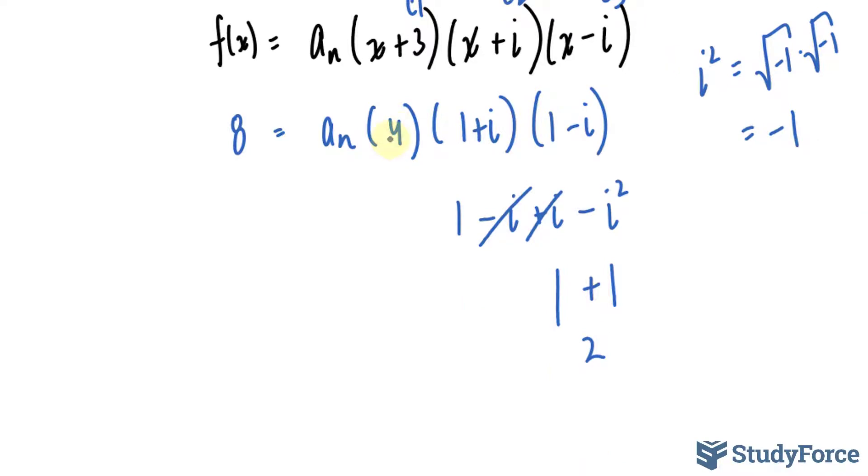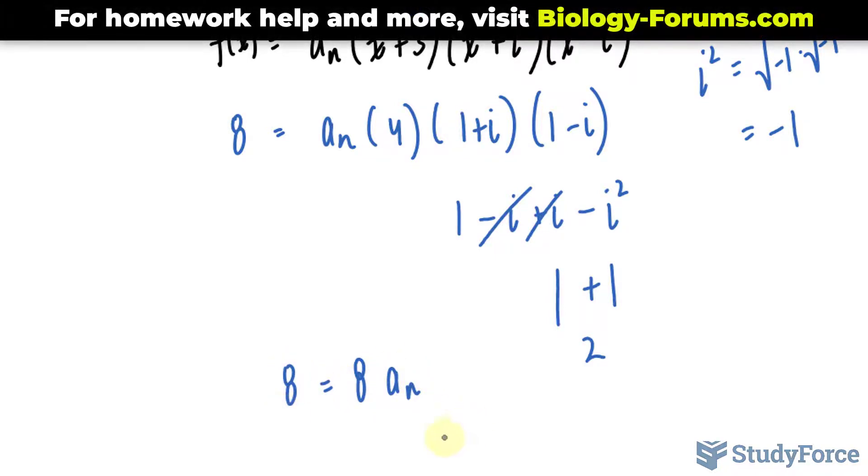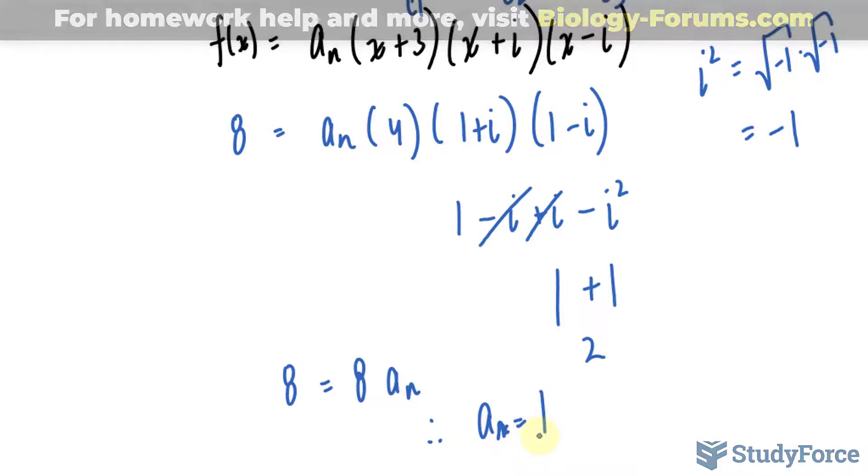2 times 4 is 8, so we have 8 times a_n = 8. Therefore, a_n = 1.